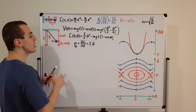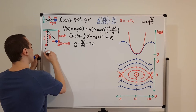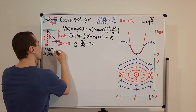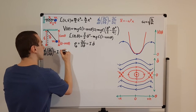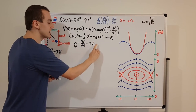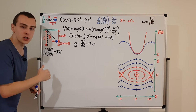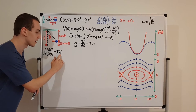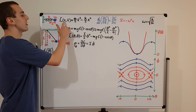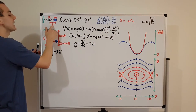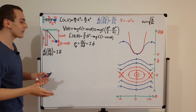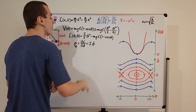Now let's use the Euler-Lagrange equation to find the equation of motion for the pendulum. The time derivative of the partial derivative of the Lagrangian with respect to theta-dot equals I times theta-double-dot — the moment of inertia times the angular acceleration. The moment of inertia is a constant, so the time derivative just introduces another time derivative to theta. Note that theta-double-dot doesn't have the same units as linear acceleration; the moment of inertia plays the role of mass but is not equal to the mass.